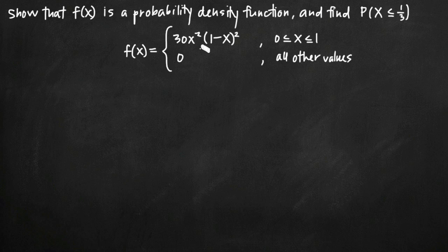We've been asked to do two things: one, verify that f is a probability density function, and two, find the probability that x is less than or equal to 1/3. That's what this means here — the probability that x is less than or equal to 1/3.